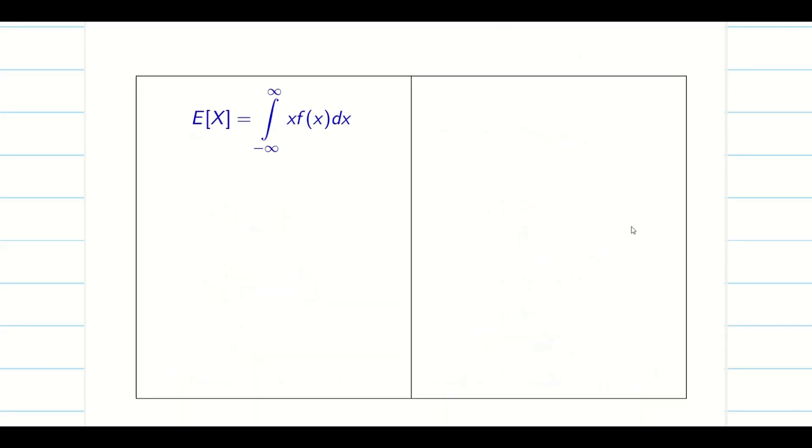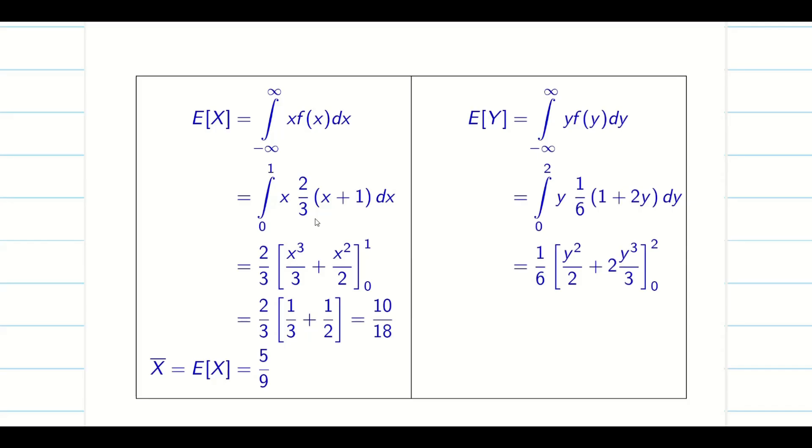Let us find E(X). For E(X), the formula is integral from infinity to infinity of x*f(x). The marginal distribution is x into f(x). As I said earlier, before integrating, let us simplify this equation so it is easy for us to integrate. Then we will get the solution. Similarly, we can find E(Y) and we can find x bar and y bar, since expectation or x bar or mean are all the same.